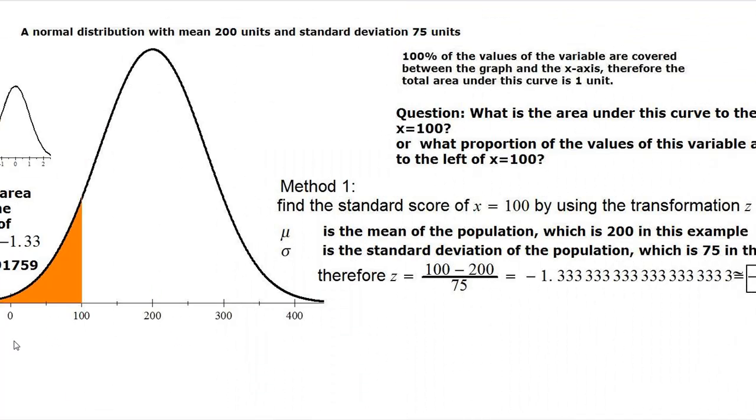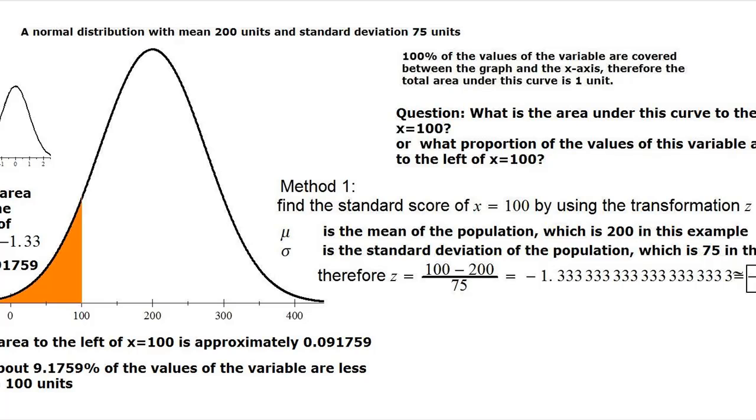So this means that the area to the left of z equals negative 1.33, under the standard normal curve, whose mean is zero and standard deviation is 1, is 0.091759, which when translated to this distribution becomes the area to the left of x equals 100, because negative 1.33 corresponded with x equals 100. So your answer is about 9.1759 percent of the values of the variable are less than 100 units.